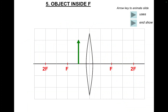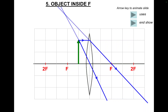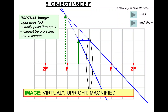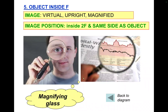Object inside F — this comes up in exams quite a lot, but once you've done it, it's quite straightforward. Parallel to the axis, refract through F. Second ray straight through the optical centre. These two rays are moving away from each other so they'll never meet. You have to trace them back to where they appear to have come from, then draw your image where they meet using dashed lines. It's a virtual image because it's on the same side of the lens as the object — you cannot project this onto a screen. It's virtual, upright, and magnified. Use: magnifying glass.